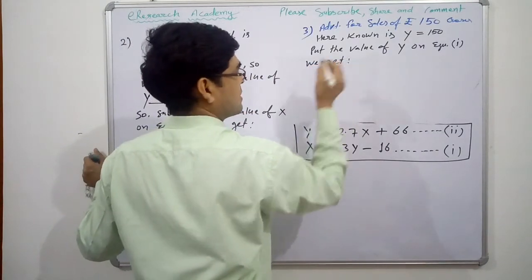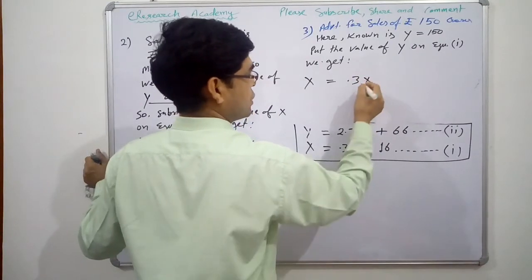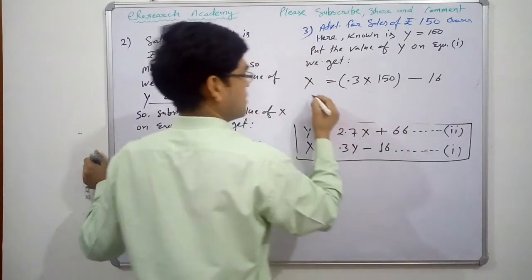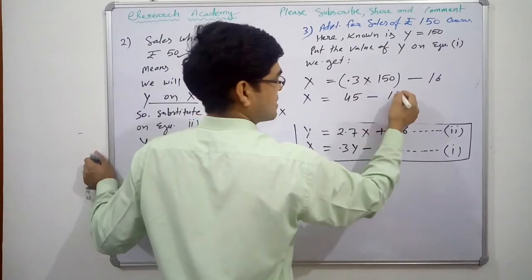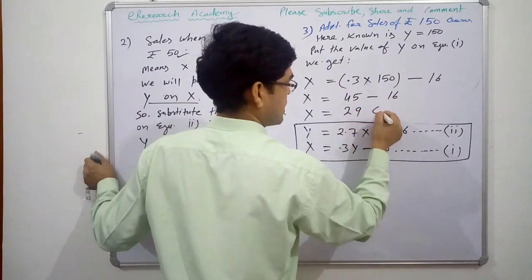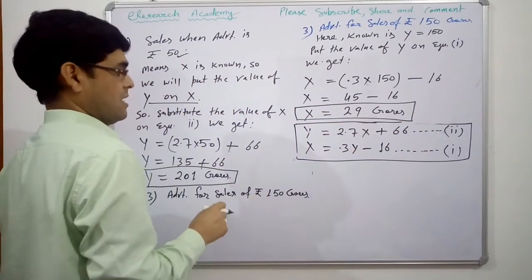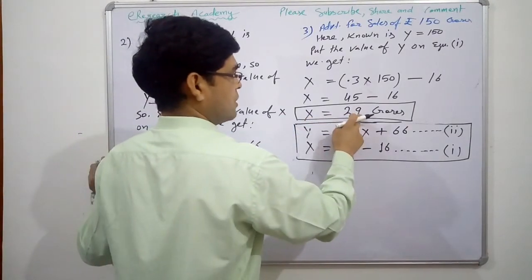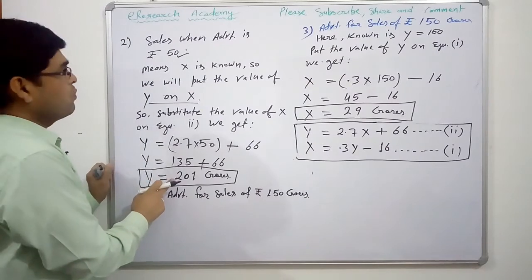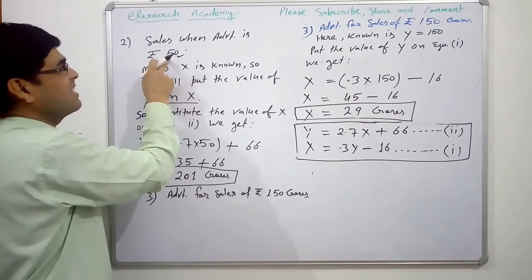Using equation one, X equals 0.3Y minus 16. Substituting Y equals 150: X equals 0.3 times 150 minus 16, so X equals 45 minus 16, therefore X equals 29 crore rupees. So we need advertisement of 29 crore rupees to achieve sales of Rs.150 crore. And we need 201 crore of sales to meet the cost of advertisement of Rs.50 crore.